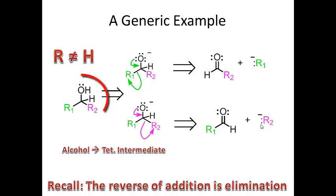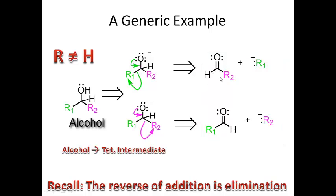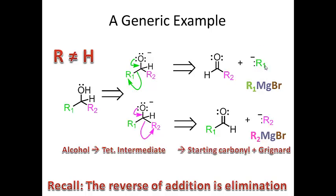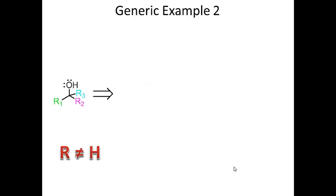Retrosynthesis is simply working in reverse: I start at the product and end at the starting materials. This alcohol resulted from an aldehyde and a Grignard. R1 must be derived from a Grignard unit — so that's R1-MgBr — and R2 must also be derived from a Grignard unit — R2-MgBr. So my retrosynthesis goes: alcohol → tetrahedral intermediate → eliminate → starting carbonyl plus Grignard reagent.